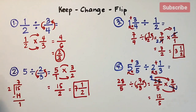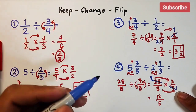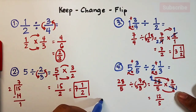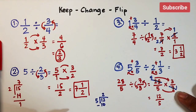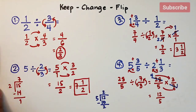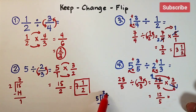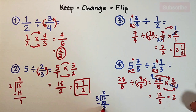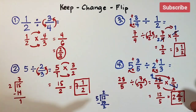Now convert 12 over 5 into a mixed number. 12 divided by 5 is 2, and 2 times 5 is 10. Subtract — the remainder is 2. The quotient, 2, becomes the whole number, and the remainder, 2, serves as the numerator over the denominator 5. So the equivalent mixed number is 2 and two-fifths.